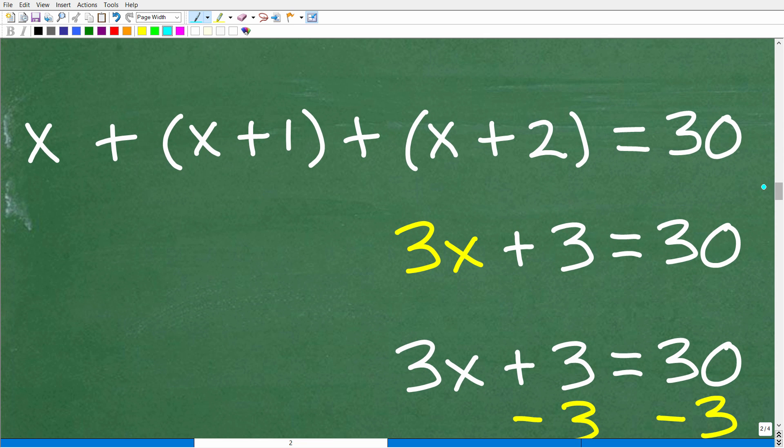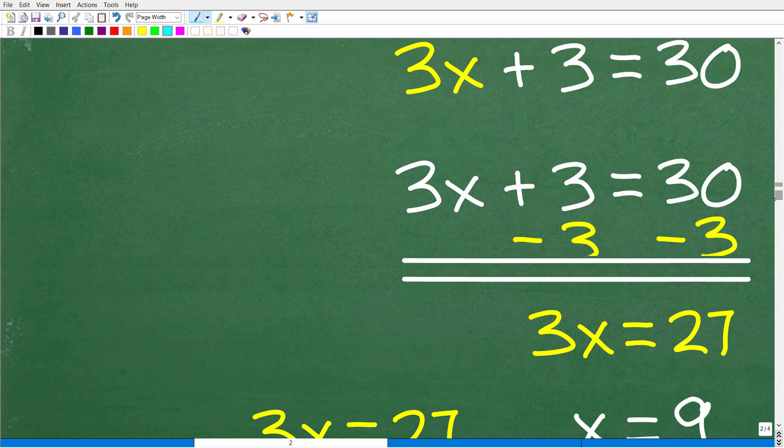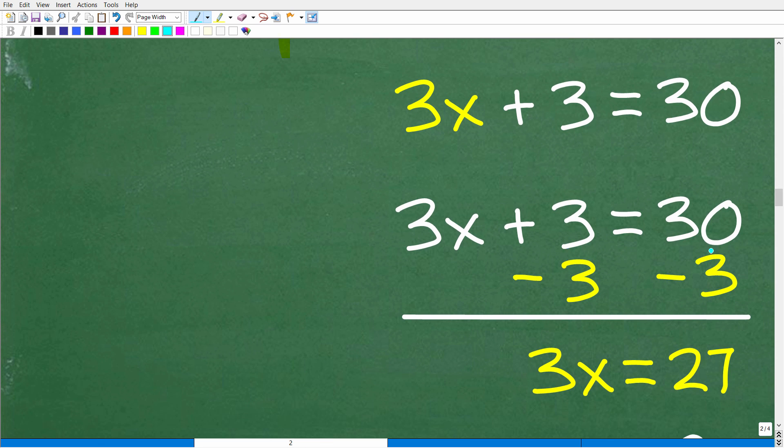All right, so here's the equation. This is not that difficult. First things, we're going to combine like terms. We have an X, X, and X. So that's 3X. We have 1 and a 2. So 1 plus 2 is 3. So here, our lovely equation is down to 3X plus 3. 3X plus 3 is equal to 30. And to solve for X, all we have to do is subtract 3 from both sides of the equation. We have 3X is equal to 27.